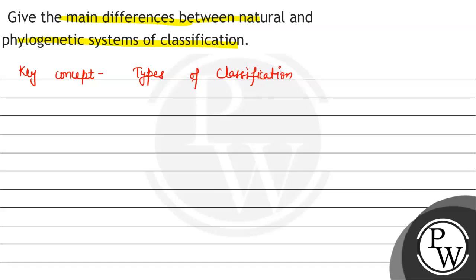Basically, there are three types of classification. One is natural, two is artificial, and the third one is phylogenetic.